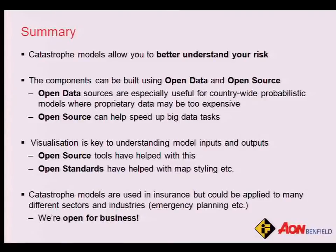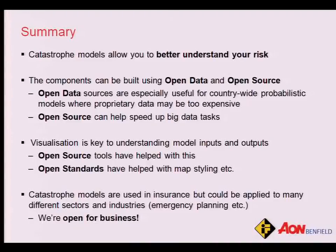In summary: catastrophe models allow you to better understand your risk to catastrophes. We can build the components using open data and open source. Open data sources are especially useful for countrywide models where we need a general view of catastrophic risk rather than a detailed scenario model. Open source software can help speed up big data tasks — we saw Python used to compute hundreds of thousands of earthquake footprints. For visualization, we're using GeoServer and OpenLayers, along with open standards like WMS and SLD. Catastrophe models are really used in insurance, but maybe we could be using them in many other sectors and industries — we're open for business.